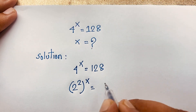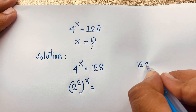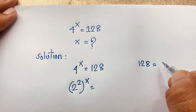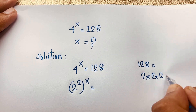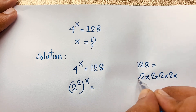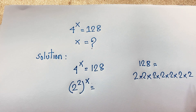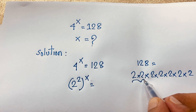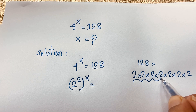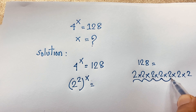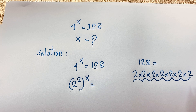On the right side, 128 equals 2 times 2 times 2 times 2 times 2 times 2 times 2. Let's verify: 2×2=4, 4×2=8, 8×2=16, 16×2=32, 32×2=64, 64×2=128.